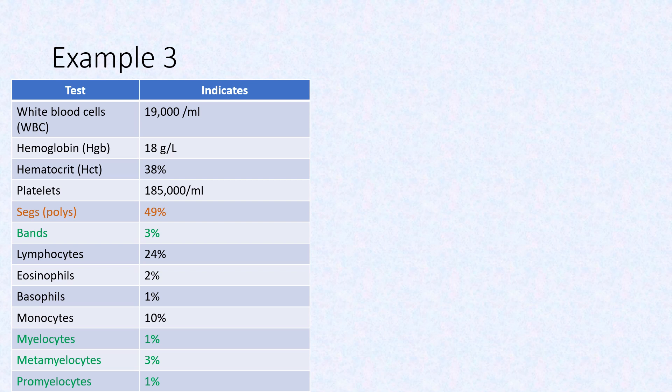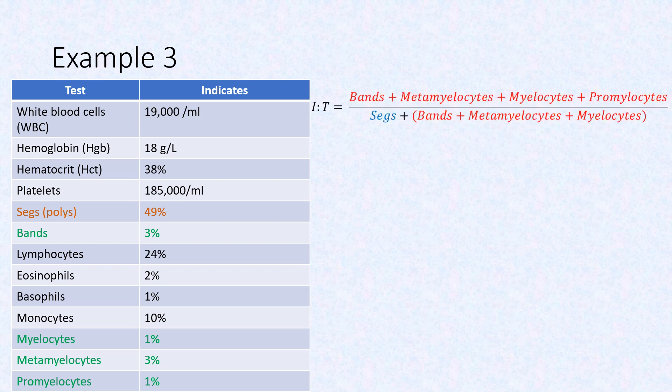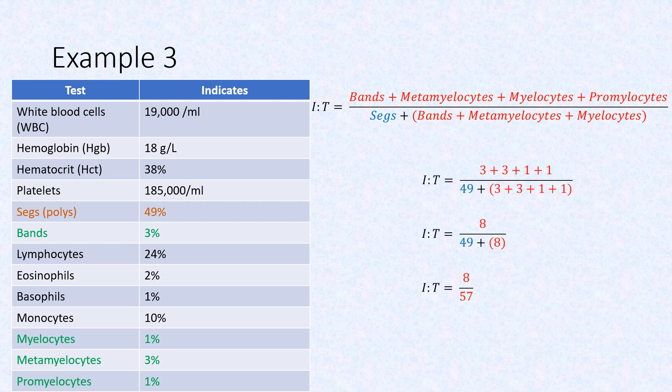Calculate the IT ratio for example 3. Recall the formula: immature neutrophils divided by total neutrophils. From the CBC, we need the SEGS and the immature neutrophils — bands, myelocytes, and metamyelocytes. This differential also reports promyelocytes, which are another immature form. The total percentage of immature neutrophils is 8 and the total number of neutrophils is 57. Dividing these gives an IT ratio of 0.14.